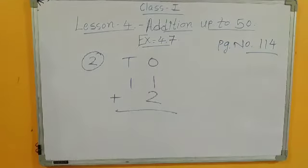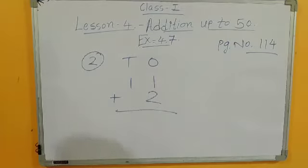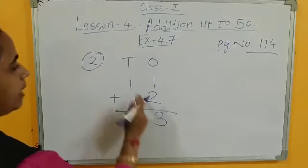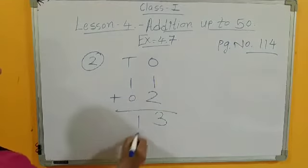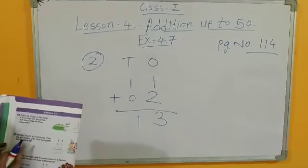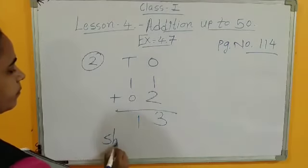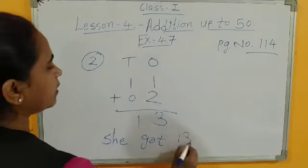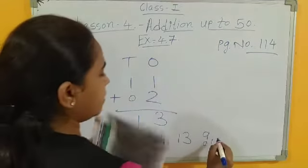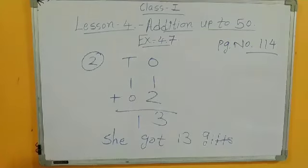This is addition, so first 1 plus 2, 1 plus 2, chapter 1, 2, 3 and 1 plus nothing here means 0, so 1. So answer, how many gifts did she get in all? She got, how many, she got 13 gifts. She got 13 gifts. Understood.